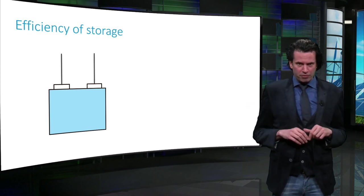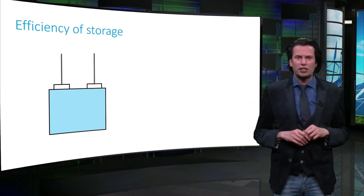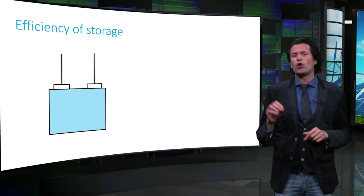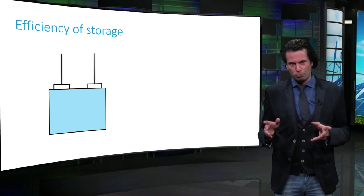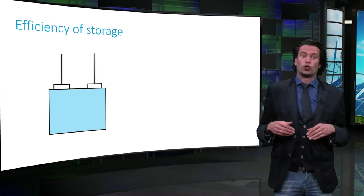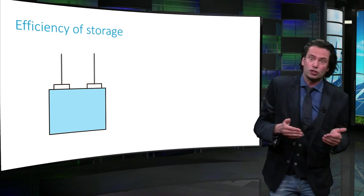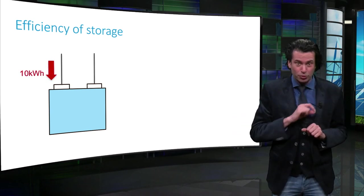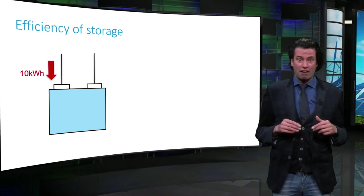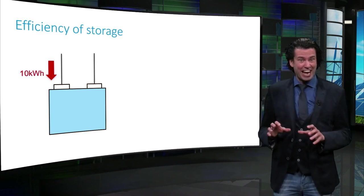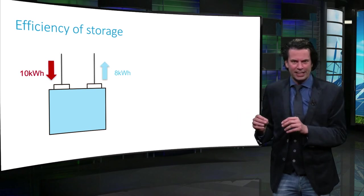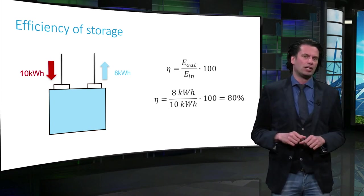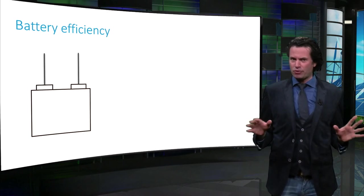Like every other component in the PV system, the efficiency of storage is also of high importance. Usually, for storage technologies we talk about round-trip efficiencies. In simple terms, it is the ratio of total storage system input to the total storage system output. For example, if 10 kW is pumped into the storage system while charging, and you can effectively retrieve only 8 kW while discharging, then the round-trip efficiency of the storage system is 80%.